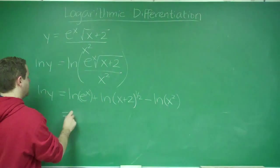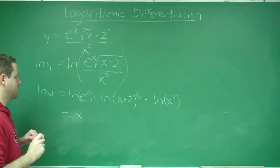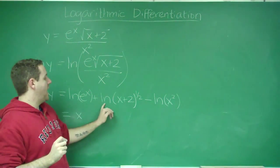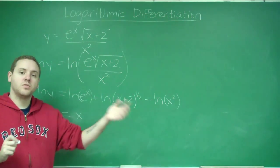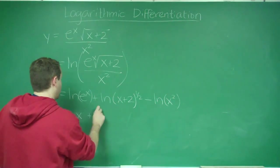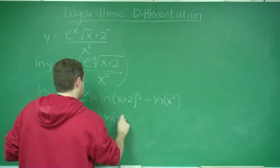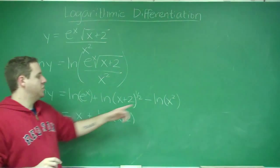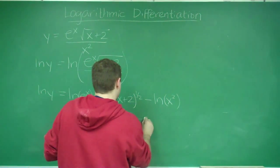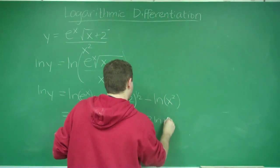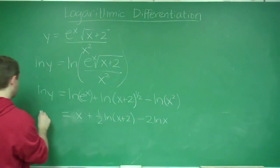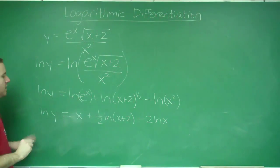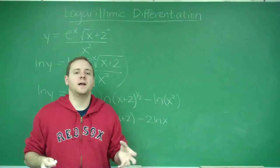ln of e to the x is just x. When you have ln of x plus 2 to the one-half power, the power can come in front. We're going to get one-half ln (x plus 2). And when you have ln of x squared, that's the same thing as minus 2 ln x.